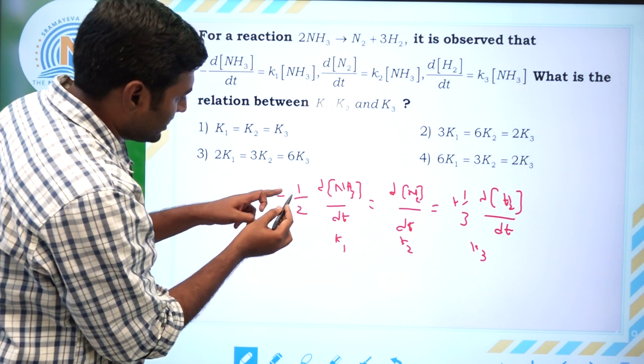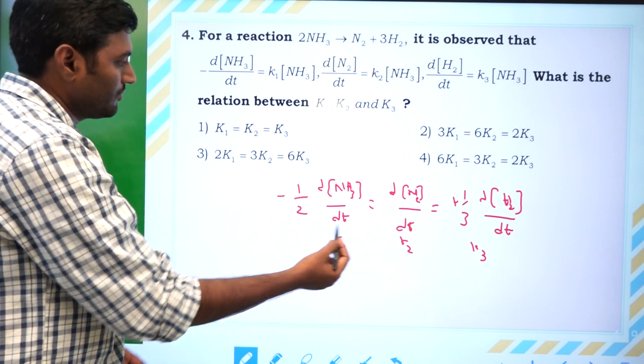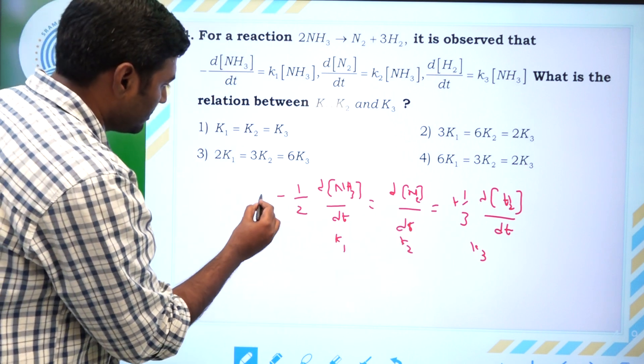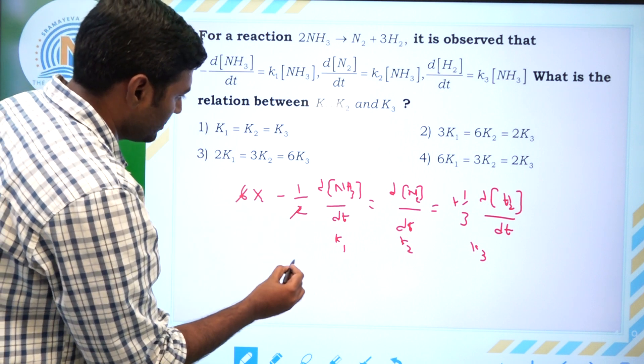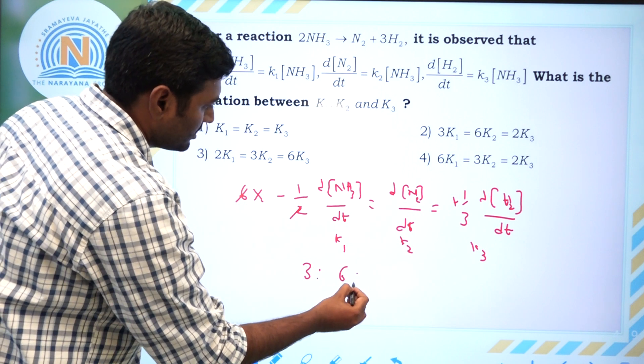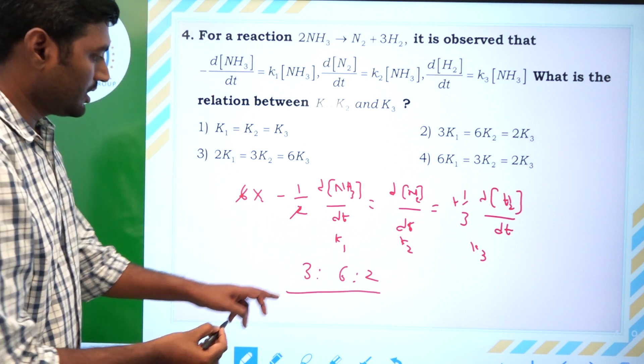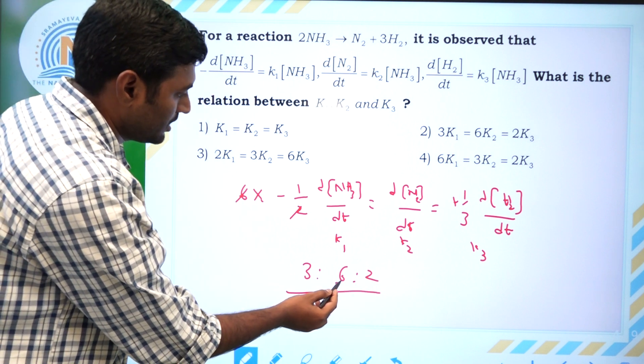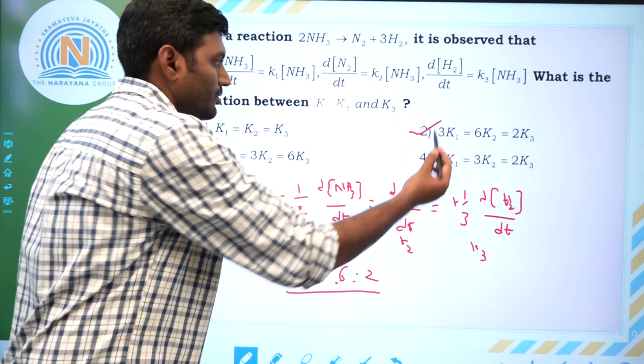It is K1 divided by 1/2, K2 divided by 1, and K3 divided by 1/3. To get this common value, multiply all by 6. Here, 1/2 times 6 is 3, 1 times 6 is 6, 1/3 times 6 is 2. So it becomes 3K1 equals 6K2 equals 2K3. Answer is this one.